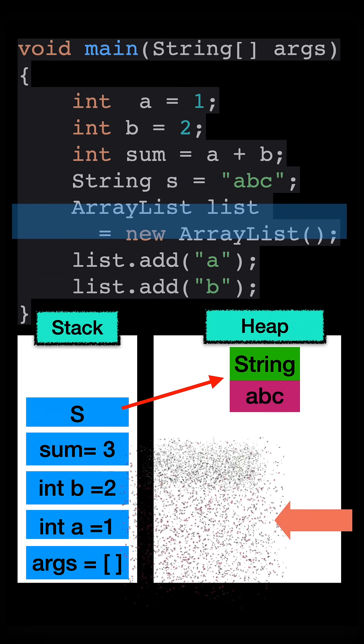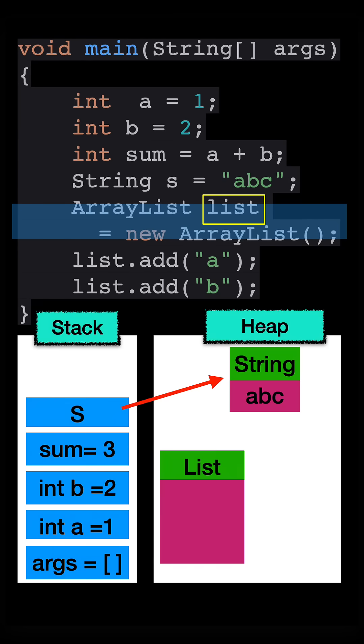Here we're creating a list object and the reference list goes into the stack. And here is a pointer pointing to the heap memory.